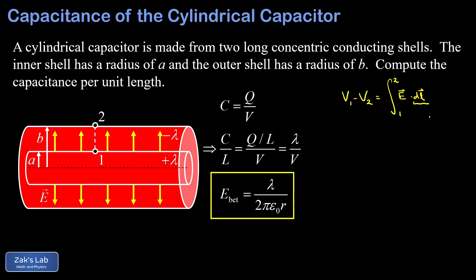There are a couple of simplifications to make here. First, we're free to choose the reference point for zero electric potential — typically the point of lowest potential — so we say V₂ equals zero. Second, along the path we've created, dl, the path length increment, is really just an increment of radius dr. The electric field is parallel to dr for every single path increment, so the dot product becomes trivial and we just end up with a simple product inside the integral.